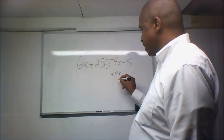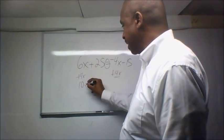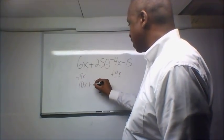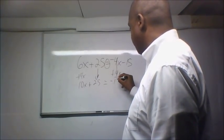Because this is an equation, if I do it over here, I have to do it over here. So that gives me 10x plus 25, that just drops down. That zeroes out, equals minus 15.